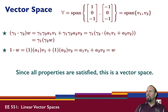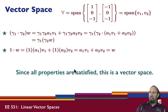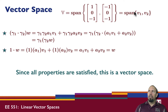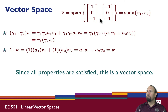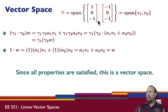Since all properties are satisfied, this set constitutes a vector space. The question was: given the set, is this a vector space? Just by looking at it, it's not that obvious, but going through it step by step we can prove that it in fact is a vector space. These two vectors are independent — they're not multiples of one another.